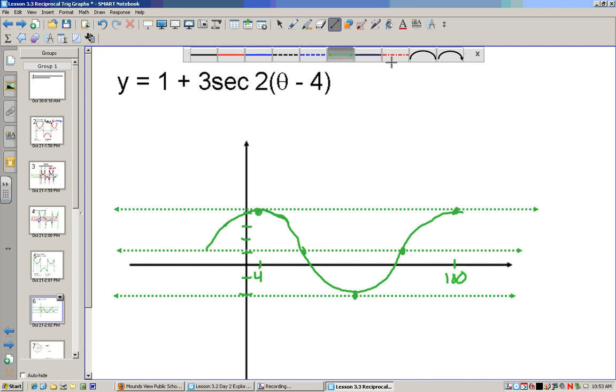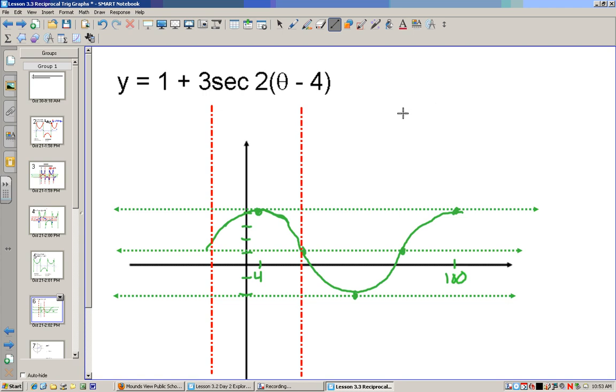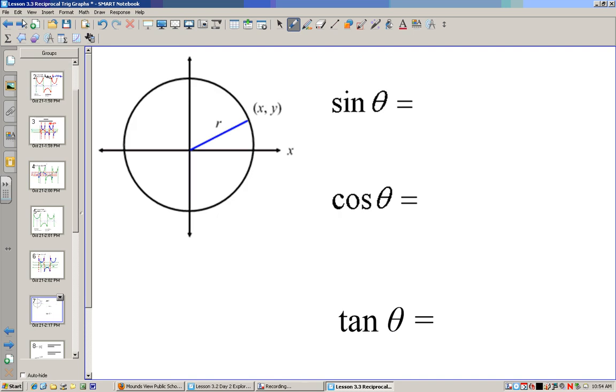So it looks something like this. So I'll draw my vertical asymptotes. There you go. And here is my graph for secant in blue.